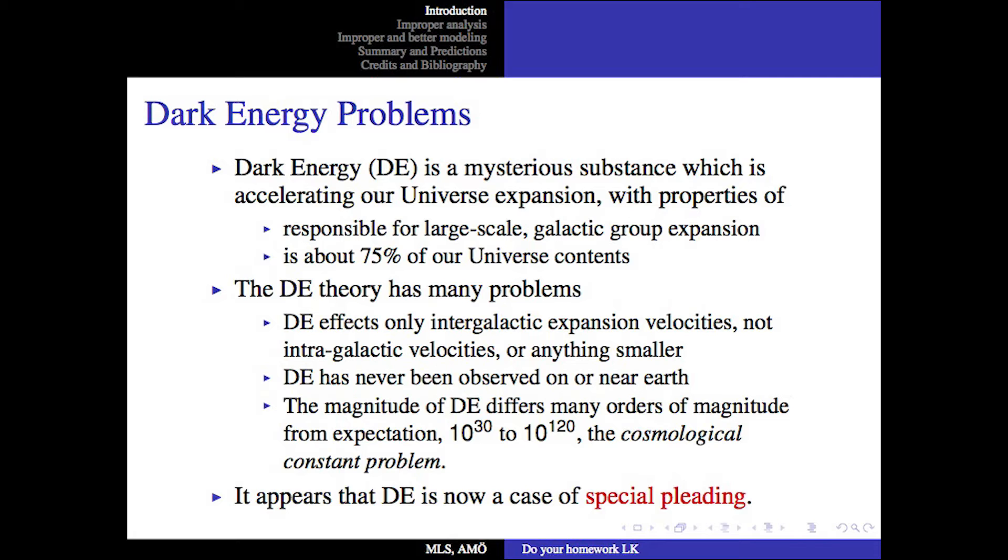Dark energy affects only intergalactic expansion velocities, not intragalactic velocities or anything smaller. Dark energy has never been observed on or near Earth. The magnitude of dark energy differs many orders of magnitude from expectation, from 10^30 to 10^120. This is called the cosmological constant problem. It now appears that dark energy is a case of special pleading.